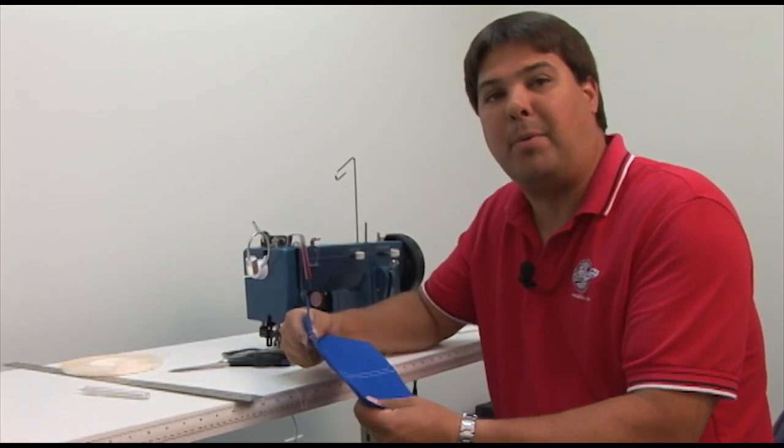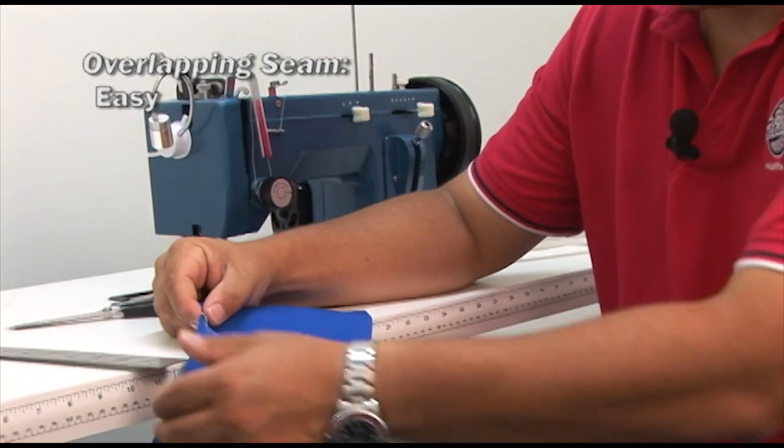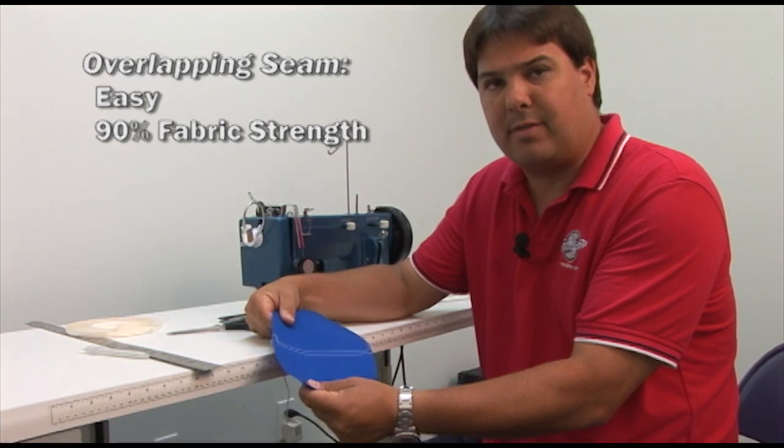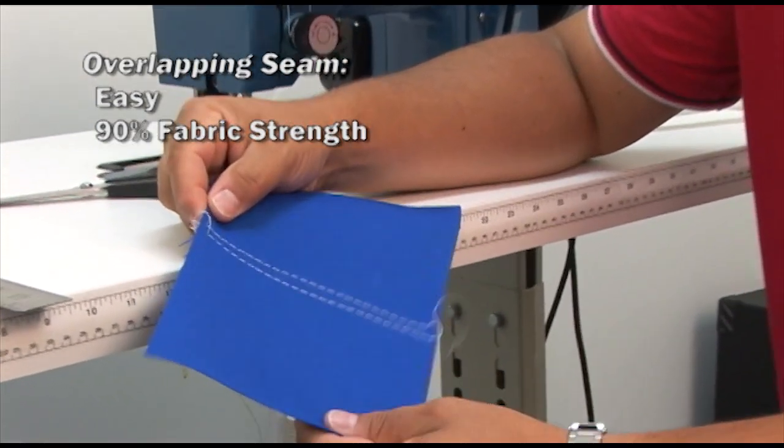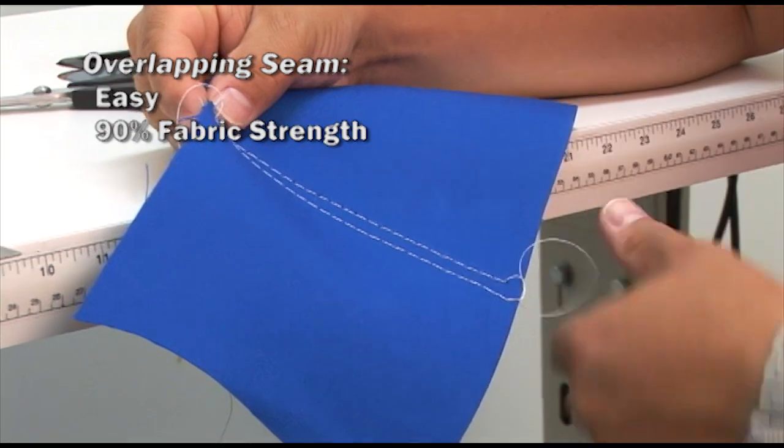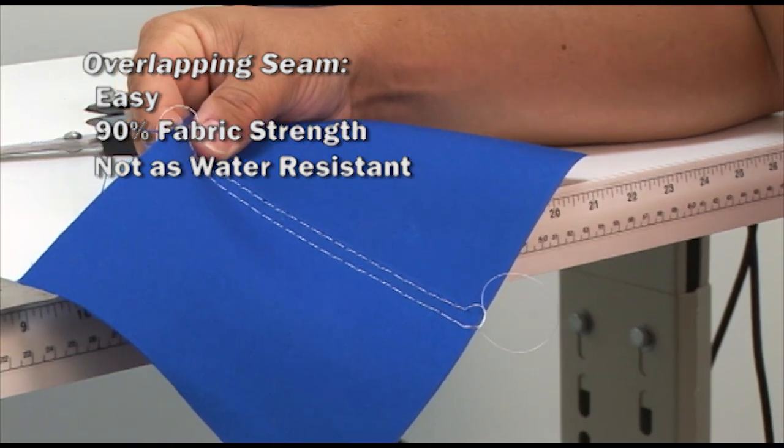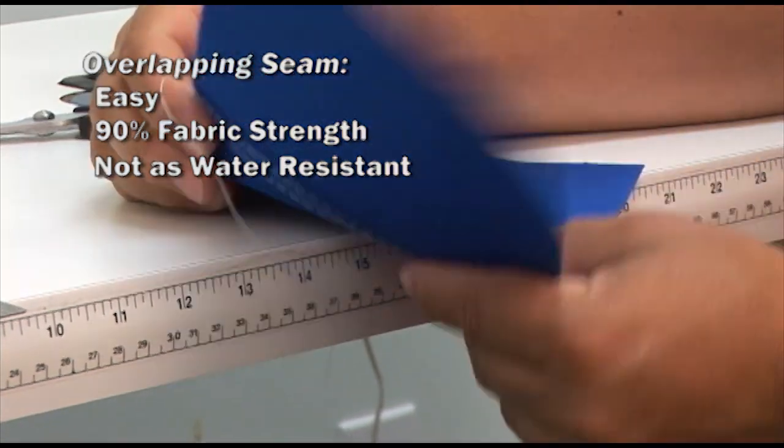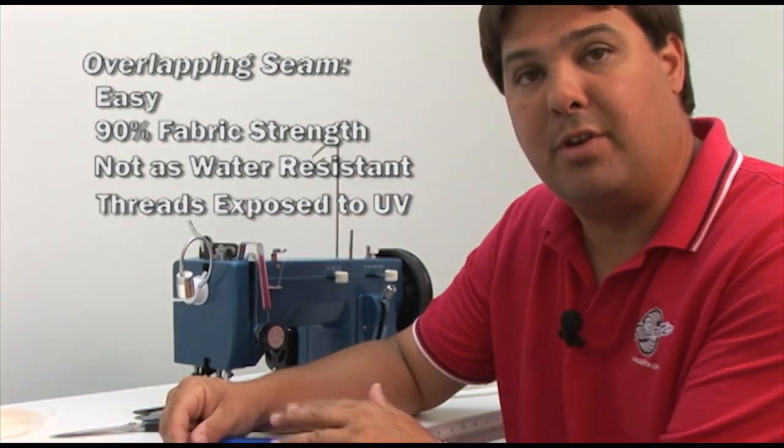Let's talk about some of the properties of the simple overlapping seam. First is it's easy, which we've already seen. It's also strong. It gives you about ninety percent of the strength of the fabric with double stitching in the seam, which is what we've got here. The problem with this type of seam is that because the stitch holes go straight through from top to bottom, it ends up not being as watertight as some of the other seams. The other issue is that because the thread lines are exposed, both top and bottom, no matter which side you put up to the elements, the thread is more susceptible to UV damage over time.